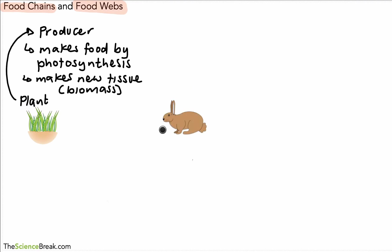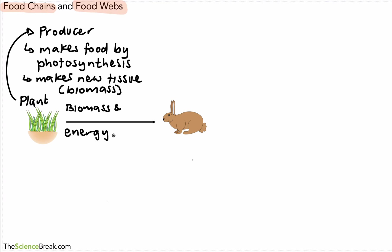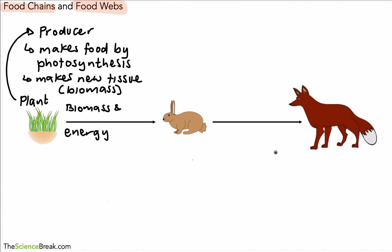In this food chain, we have a plant that is eaten by, for example, a rabbit. So the biomass — that plant tissue — and the energy in the biomass goes to the rabbit when it eats the plants. Next in this food chain, we have a fox, and again, the biomass and the energy in that biomass goes to the fox when the fox eats the rabbit.